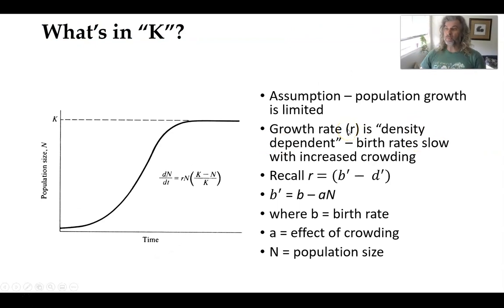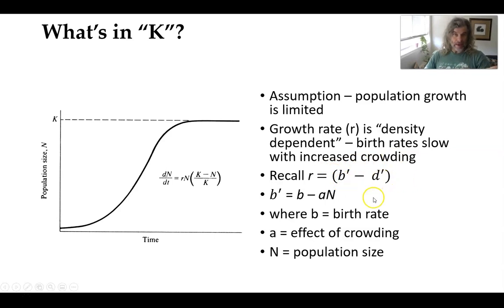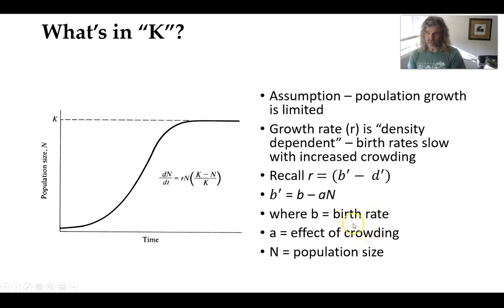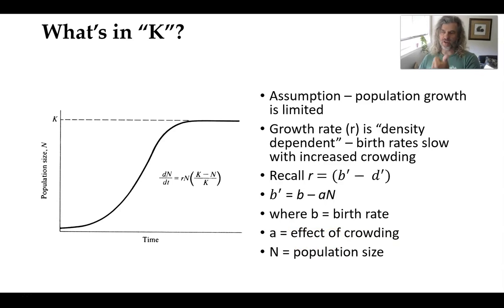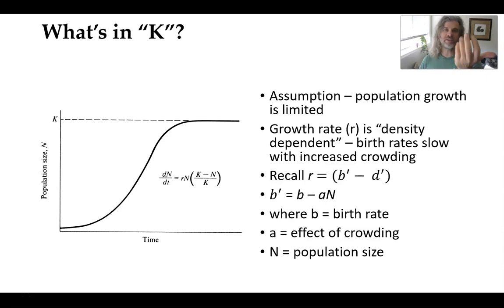This assumes that population is limited by something. The growth rate is actually exactly the same as in an exponential model, and you can have birth and death rates in there, just like in an exponential growth model. But what we add here is the effect of crowding on the growth rate. This implies that as a population nears its carrying capacity, its birth rate will decrease and potentially its death rate will increase as well, thereby creating an equilibrium at some maximum carrying capacity. It's a really compelling idea.